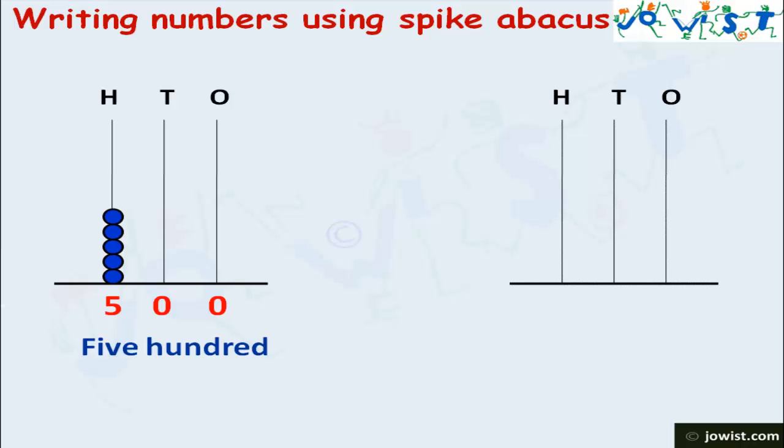Taking another example. There are 3 beads in the ones place, so we write 3. There are 5 beads in the tens place, so we write 5. And there are 4 beads in the hundreds place, so we write 4. The number is 453.